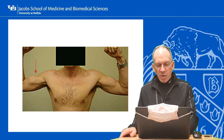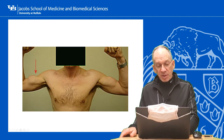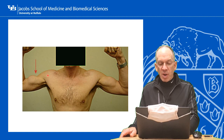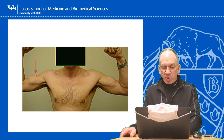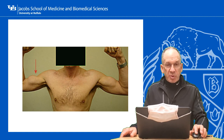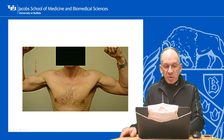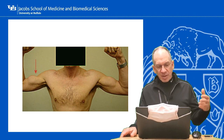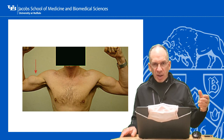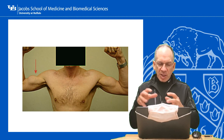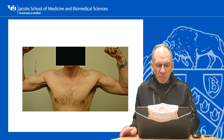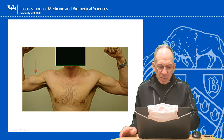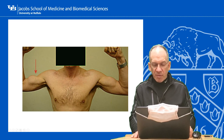Here's someone with a biceps rupture — is it proximal or distal? The normal side shows the muscle belly in its normal location. On the affected side, the muscle belly is closer to the elbow. This is what a long head of the biceps rupture looks like. The long head rupture moves the biceps closer to the elbow because the distal insertion is intact, and it doesn't slide all the way down because the short head is still attached to the coracoid process. So the biceps is partially suspended and the more lateral long head portion ends up moving distally.